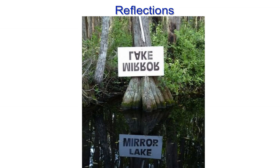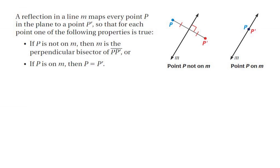Let's move forward and look at reflections. A reflection in a line M maps every point P in the plane to point P prime. In other words, the pre-image point P gets mapped to the image point P prime so that these properties are true. First of all, the line that is created between them has to be bisected by the line of reflection. Meaning that the distance from P to the line is the same as the distance from P prime to the line.